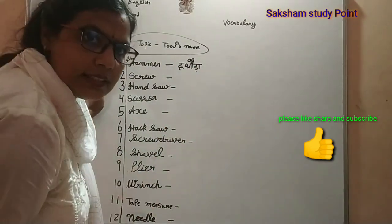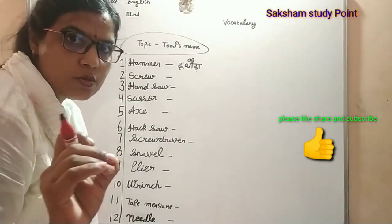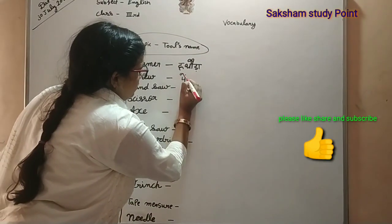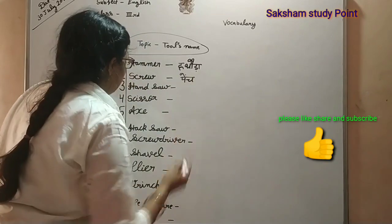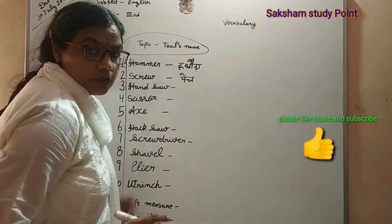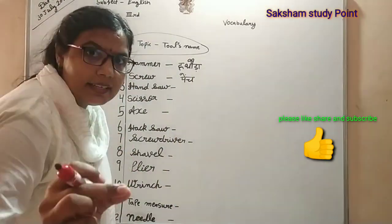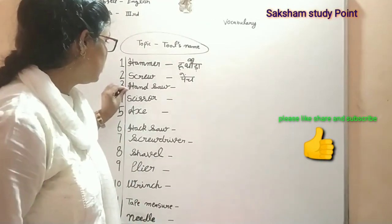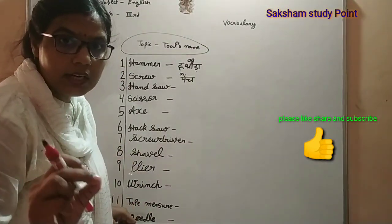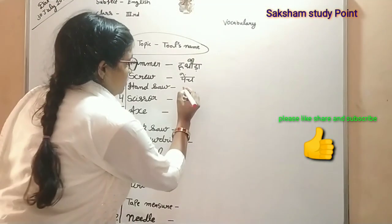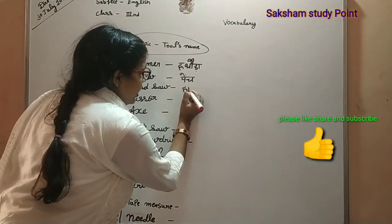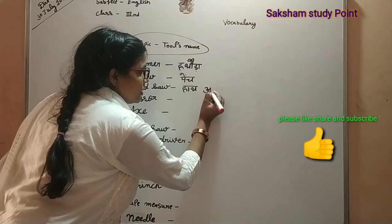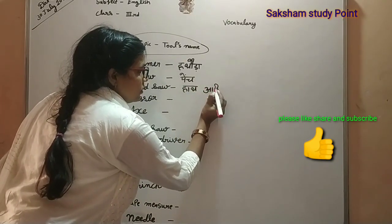S-C-R-E-W, screw. Next — H-A-N-D S-A-W, hand saw. Hand saw means hota hai — hath wali ari. Isse hum hath ari bhi kehte hain. Right?